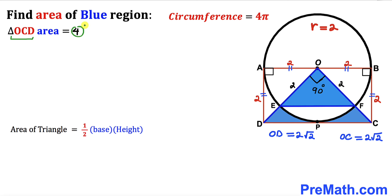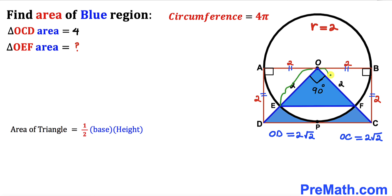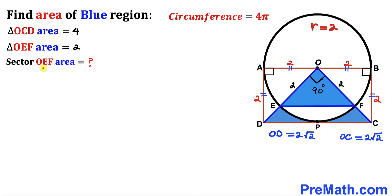Next we calculate the area of smaller triangle OEF using the same formula. The base is 2 and the height is 2, so the area of triangle OEF = ½ × 2 × 2 = 2 square units.